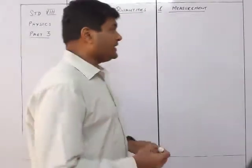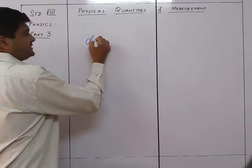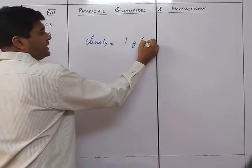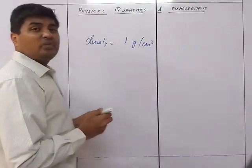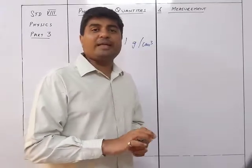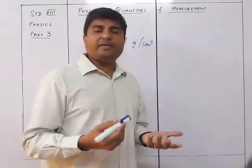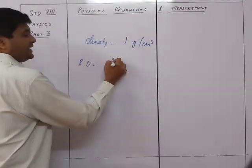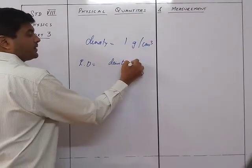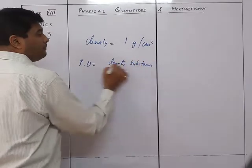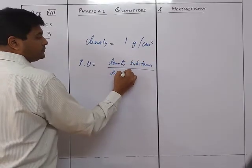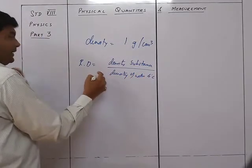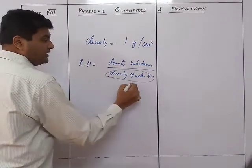Water is taken as the base because the density of water is 1 gram per centimeter cube at 4 degrees Celsius. So relative density is the density of substance upon density of water. Because the density of water is 1, this value becomes 1.